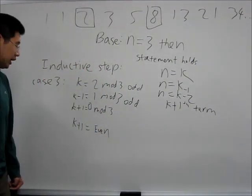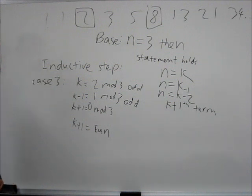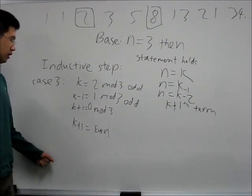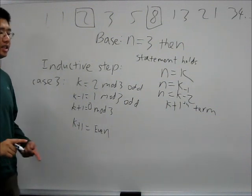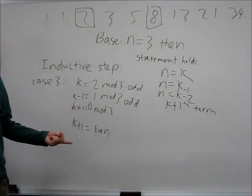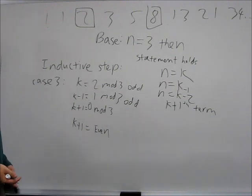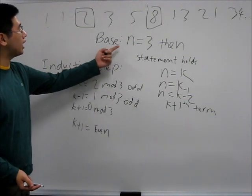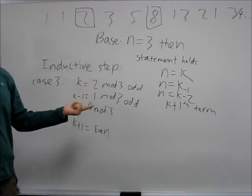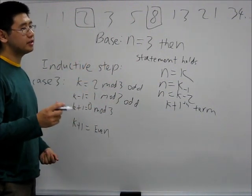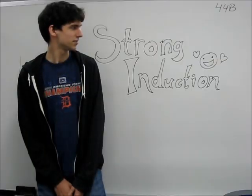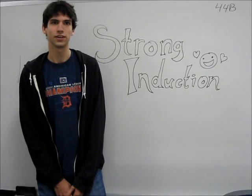Basically, we proved that when k plus 1 is not divisible by 3, then it is odd. And otherwise, it is even. Thus, we have concluded that when n is divisible by 3, F of n is even, and when it's not divisible by 3, it's odd. This has been our presentation on strong induction. Thank you for watching.